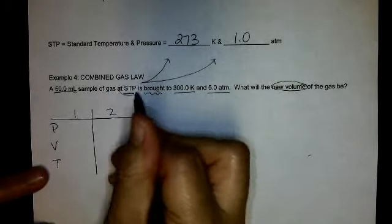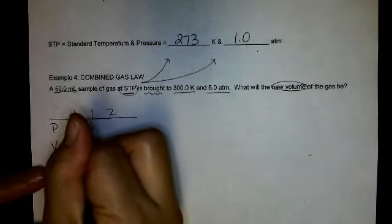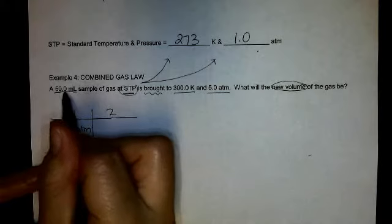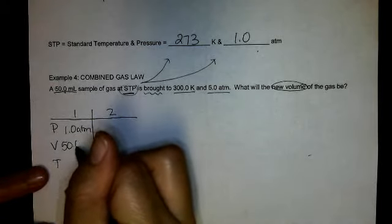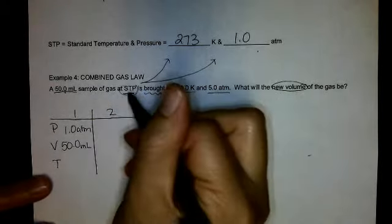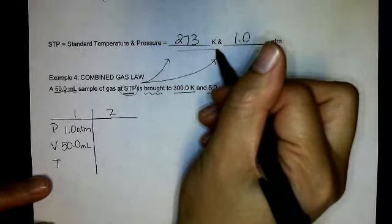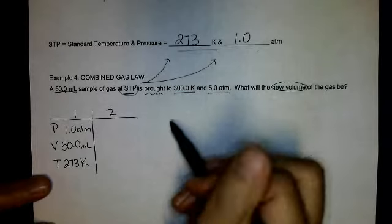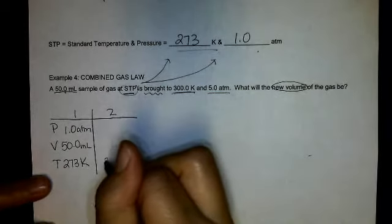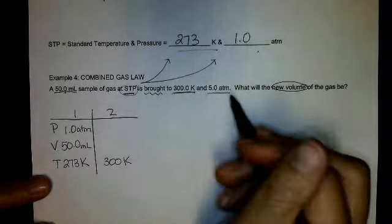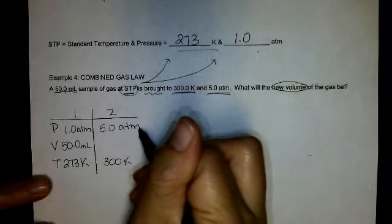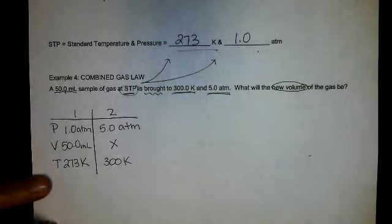My first pressure is STP, so that's 1 atmosphere. My initial volume is 50 milliliters, and my initial temperature, standard temperature, 273 Kelvin. I change to 300 Kelvin and 5 atmospheres. So I'm looking for my new volume.